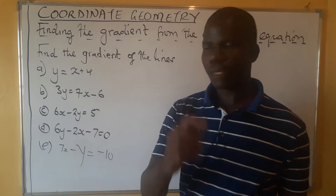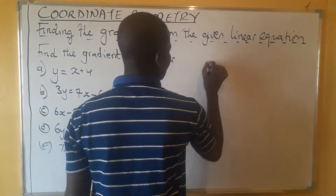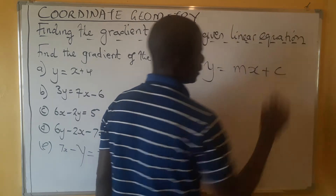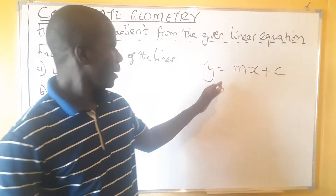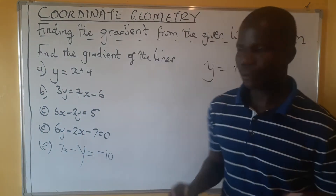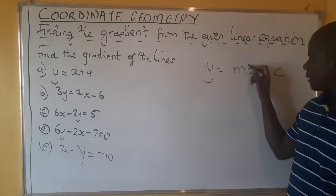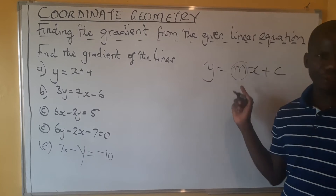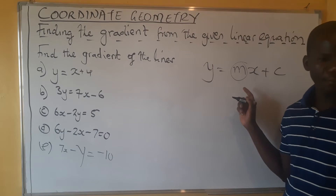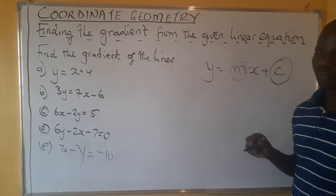We need to write our equation in the form y = mx + c. Once we write our equation in this form, the coefficient of x becomes our gradient.